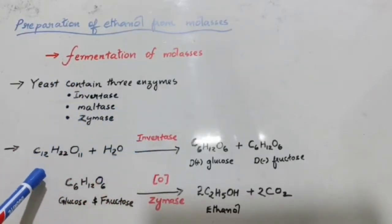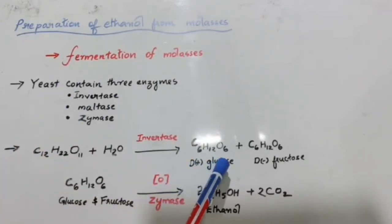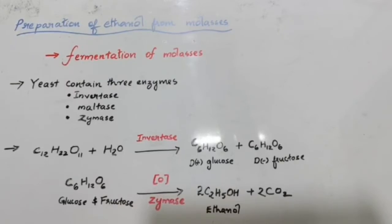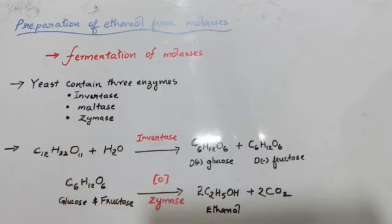In the first step, invertase converts cane sugar into an equimolar mixture of D-glucose and D-fructose. In the second step, zymase oxidizes glucose and fructose to form ethanol, with carbon dioxide as a by-product.